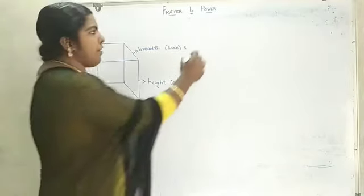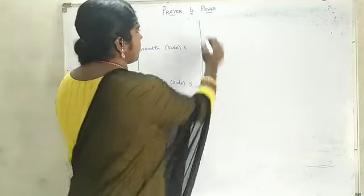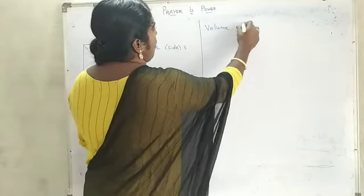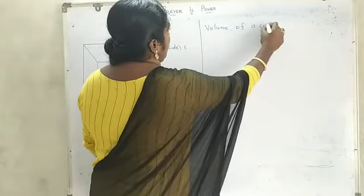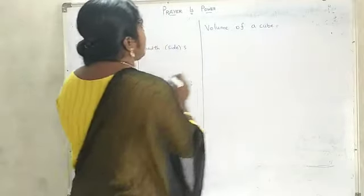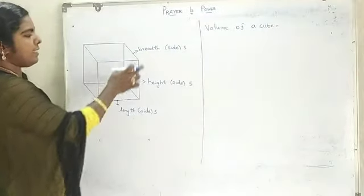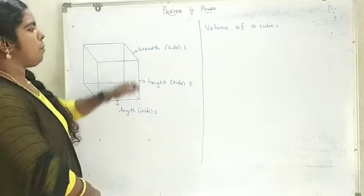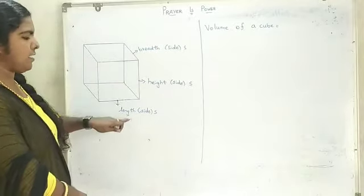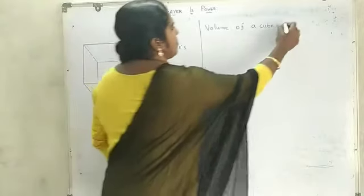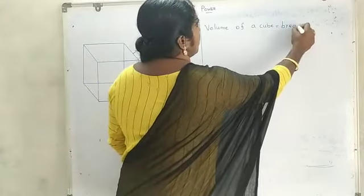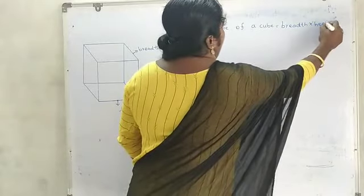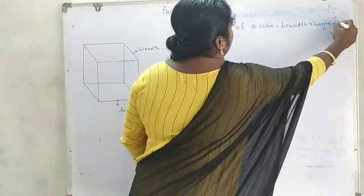Then we find the volume of a cube. The volume of a cube is the product of breadth, height, and length — that is breadth into height into length.